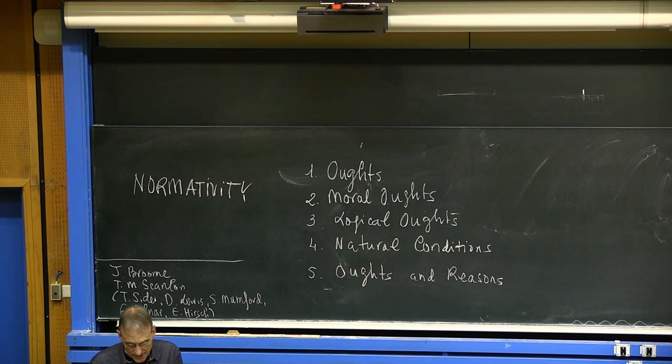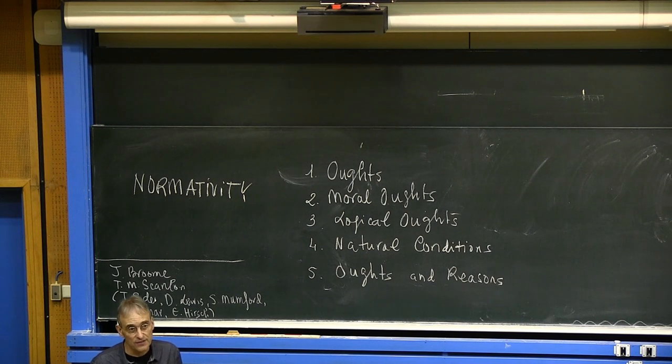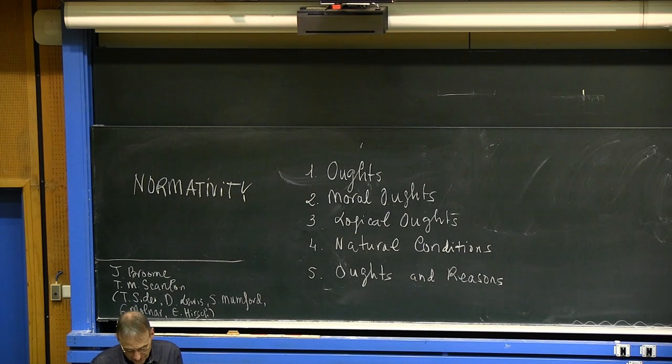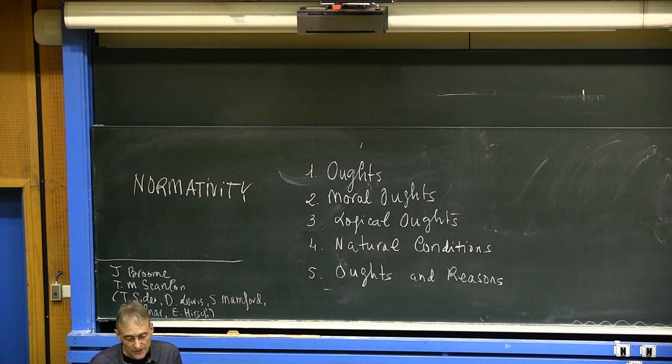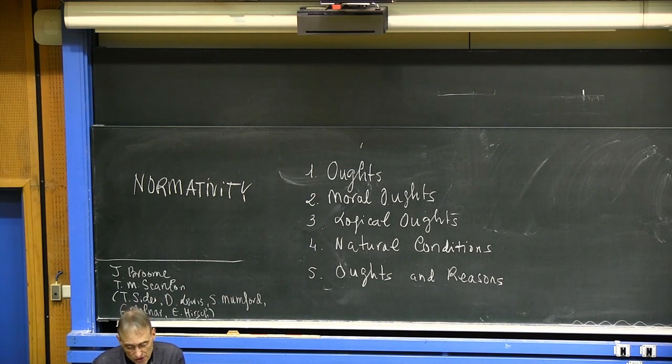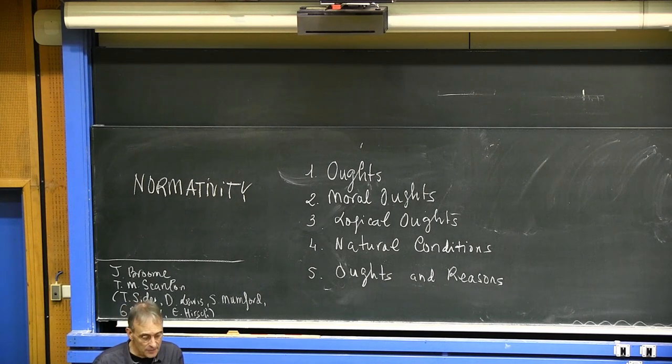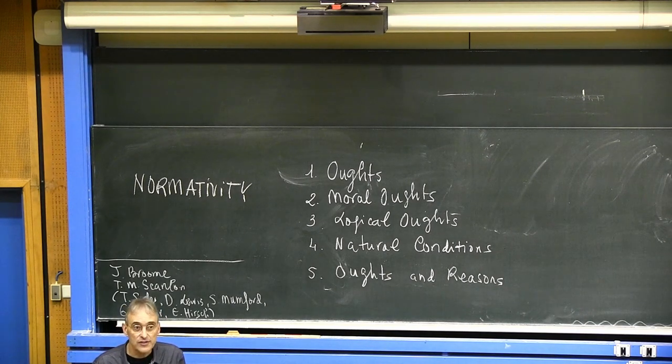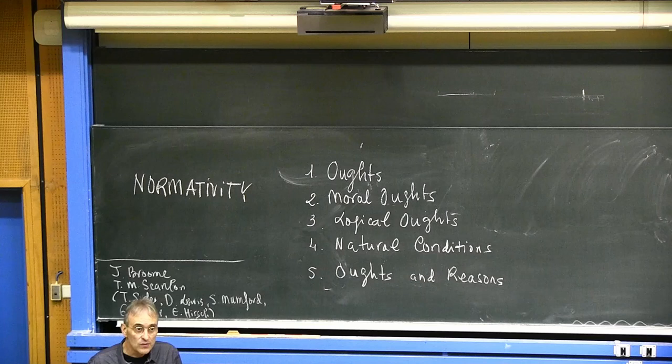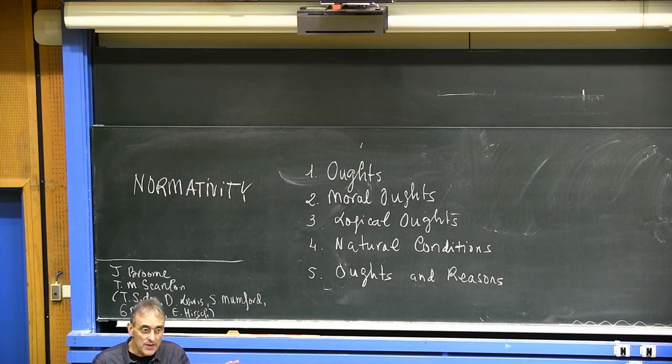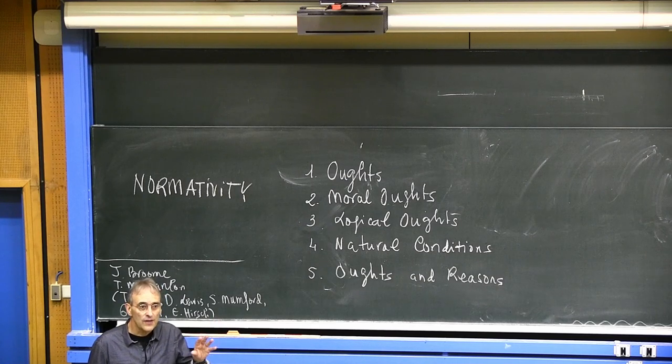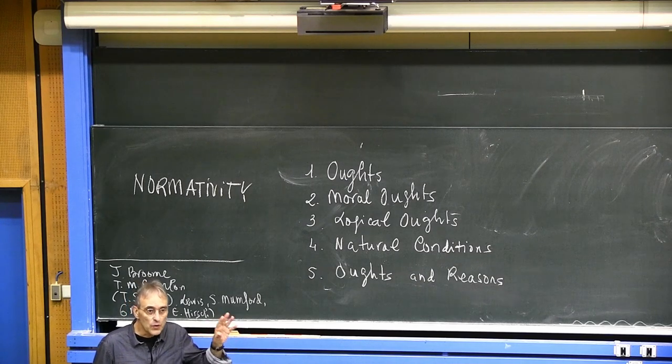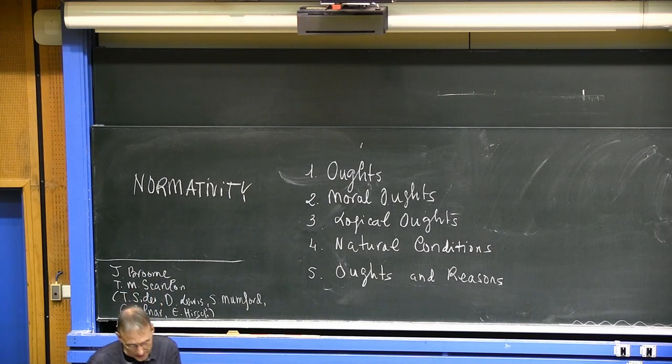Because you would identify what is primitive and what doesn't need a definition with something natural. For instance, the property of being beneficial, or the property of causing pleasure, or the property of being advantageous in evolutionary terms. So you would eliminate the difference between is and ought if you tried to define good, reducing it to a natural property.